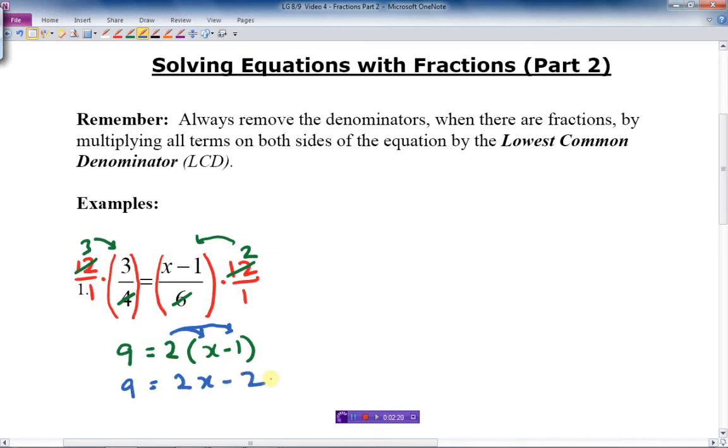For my liking, I like to switch sides here. I like the x on the left-hand side. You don't have to do it this way, but I'm going to switch two things around. I'm going to bring it up top here again. So I'm going to go 2x minus 2 equals 9. Just switch sides.